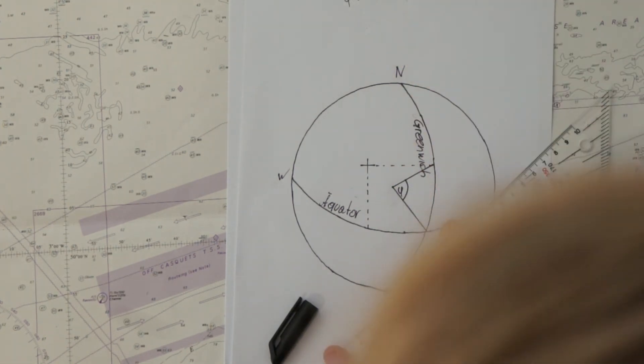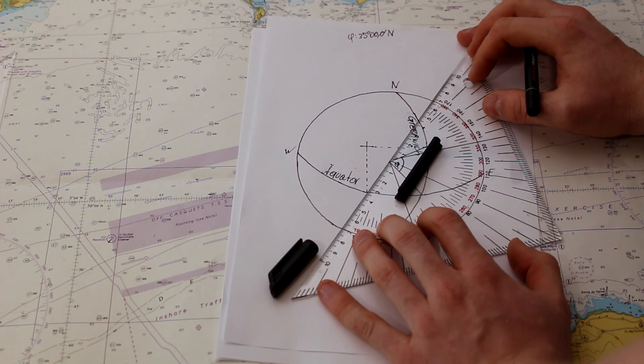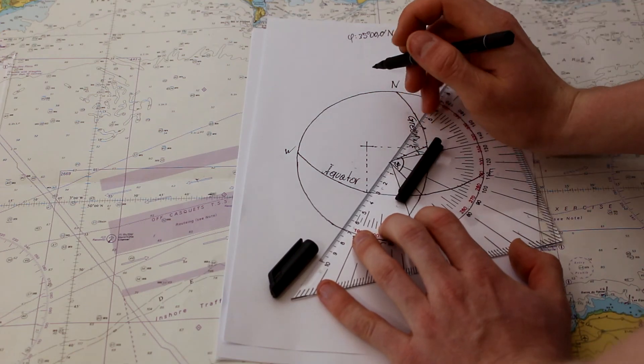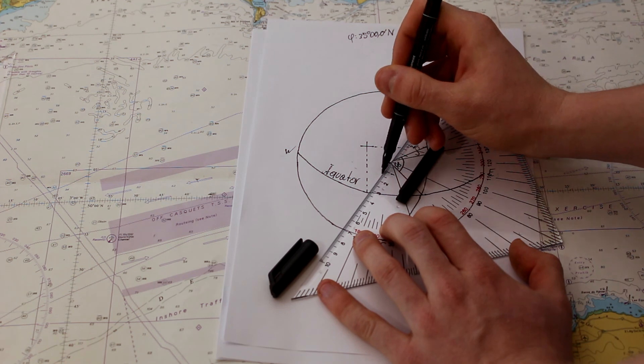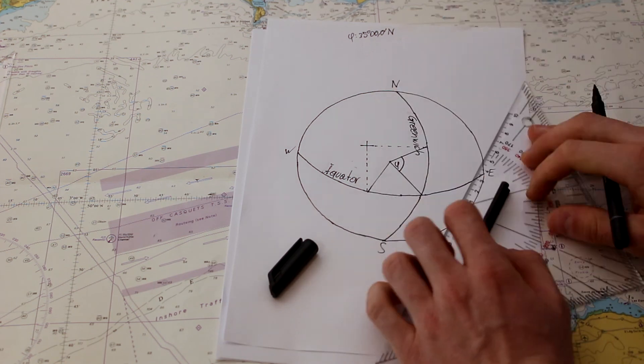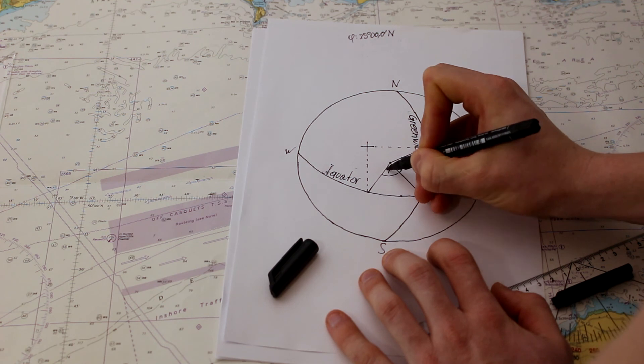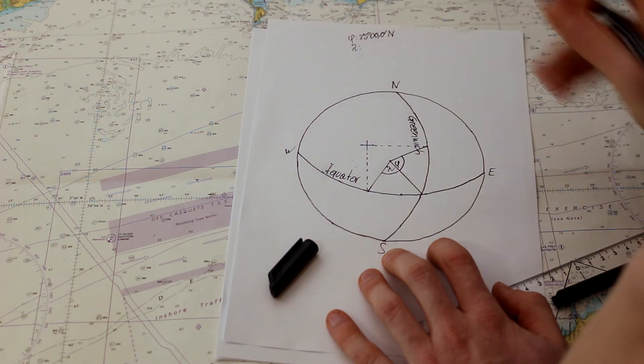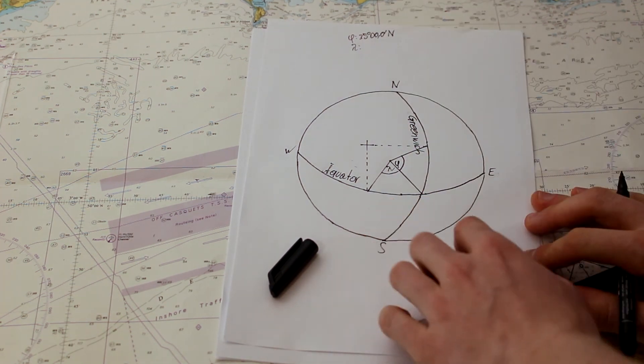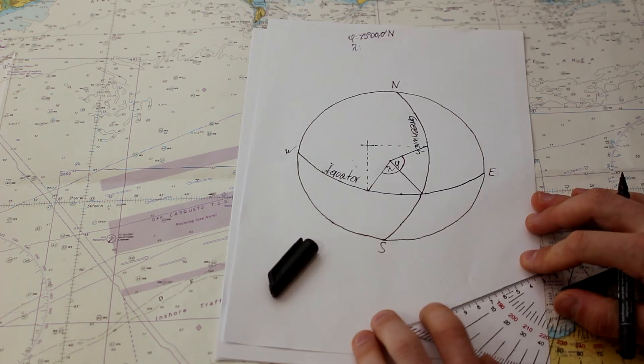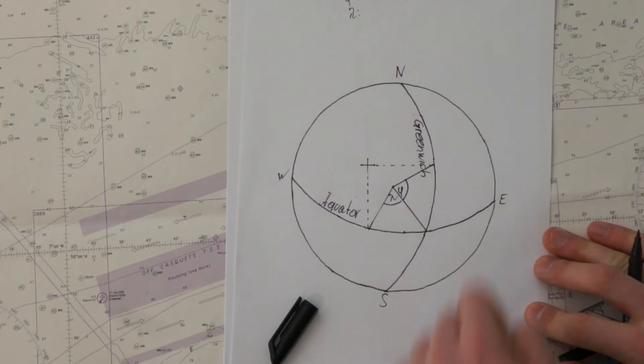And then, from the center to the earth, to your longitude of your position. That's given and named by lambda. Lambda can go from 180 east to 180 west. So, it's a three-digit number.